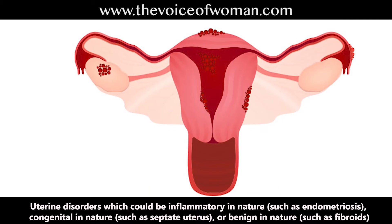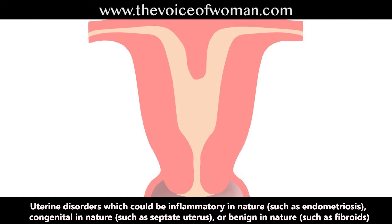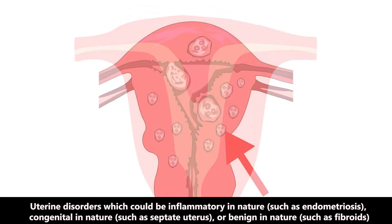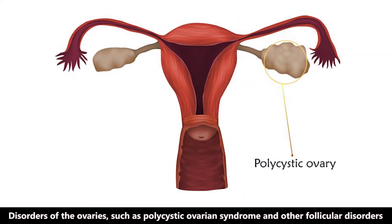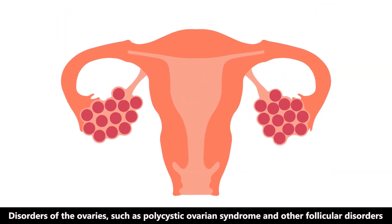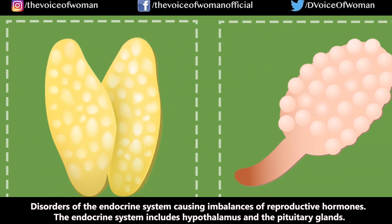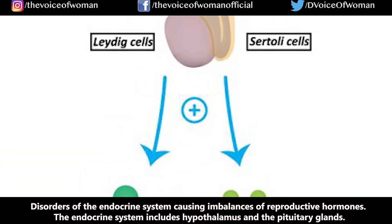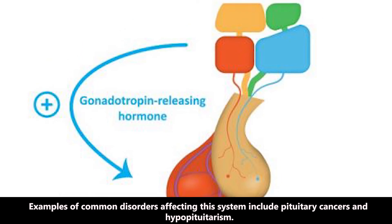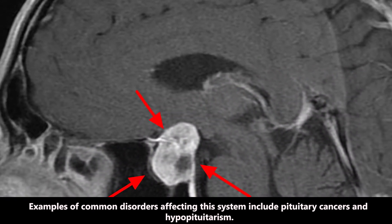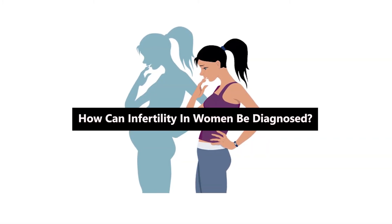Other causes include uterine disorders, which could be inflammatory in nature such as endometriosis, congenital in nature such as septate uterus, or benign in nature such as fibroids. Disorders of the ovaries such as polycystic ovary syndrome and other follicular disorders, and disorders of the endocrine system causing imbalances of reproductive hormones — including the hypothalamus and pituitary glands — such as pituitary cancers and hypopituitarism.